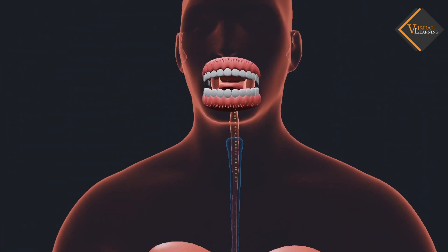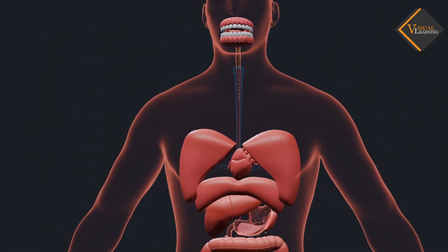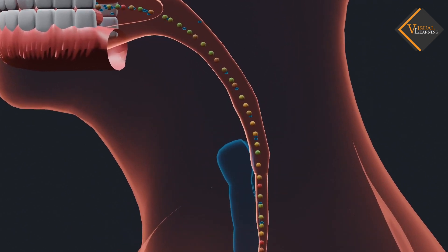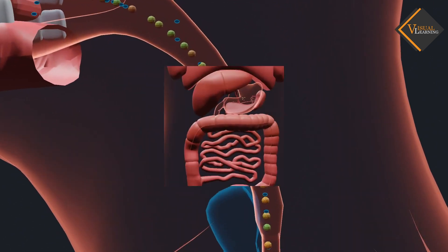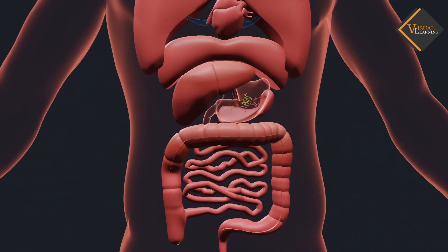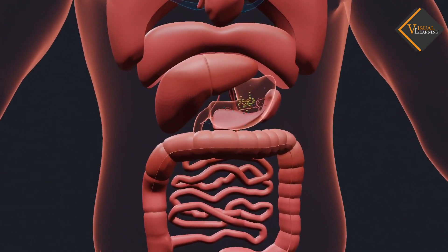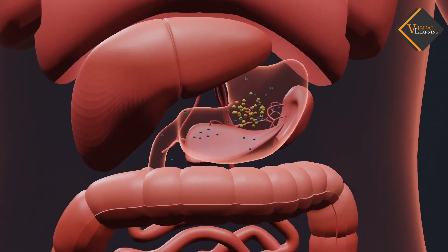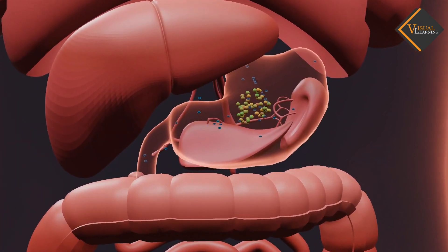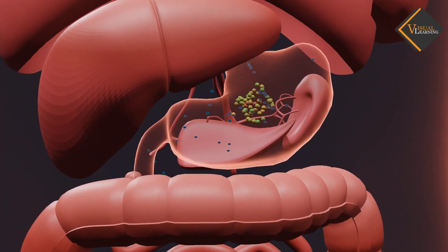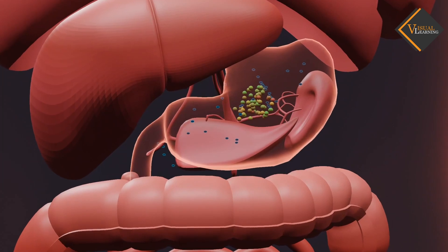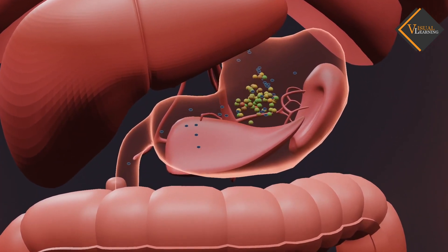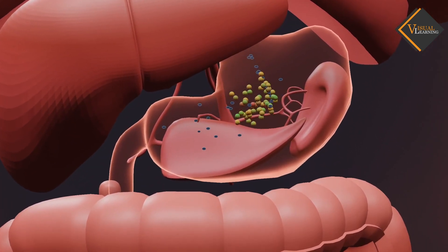From the mouth, the food is taken to the stomach through the food pipe or esophagus. The stomach is a large organ which expands when food enters it.